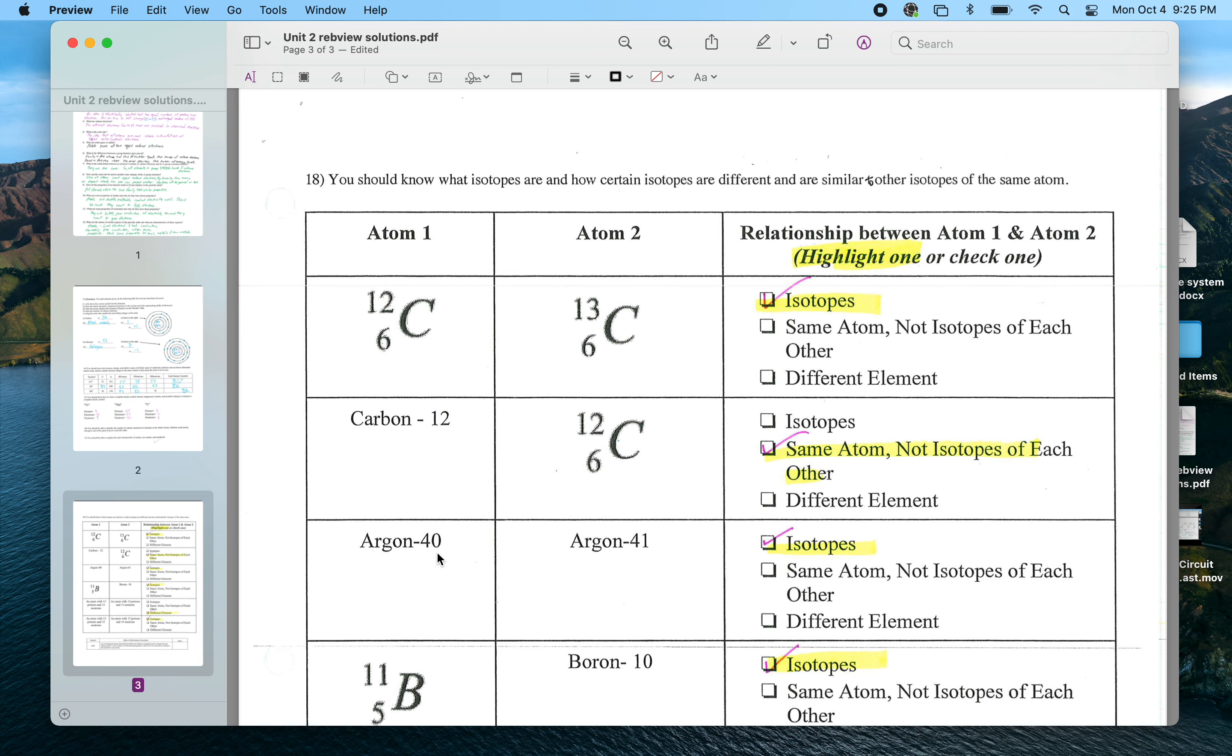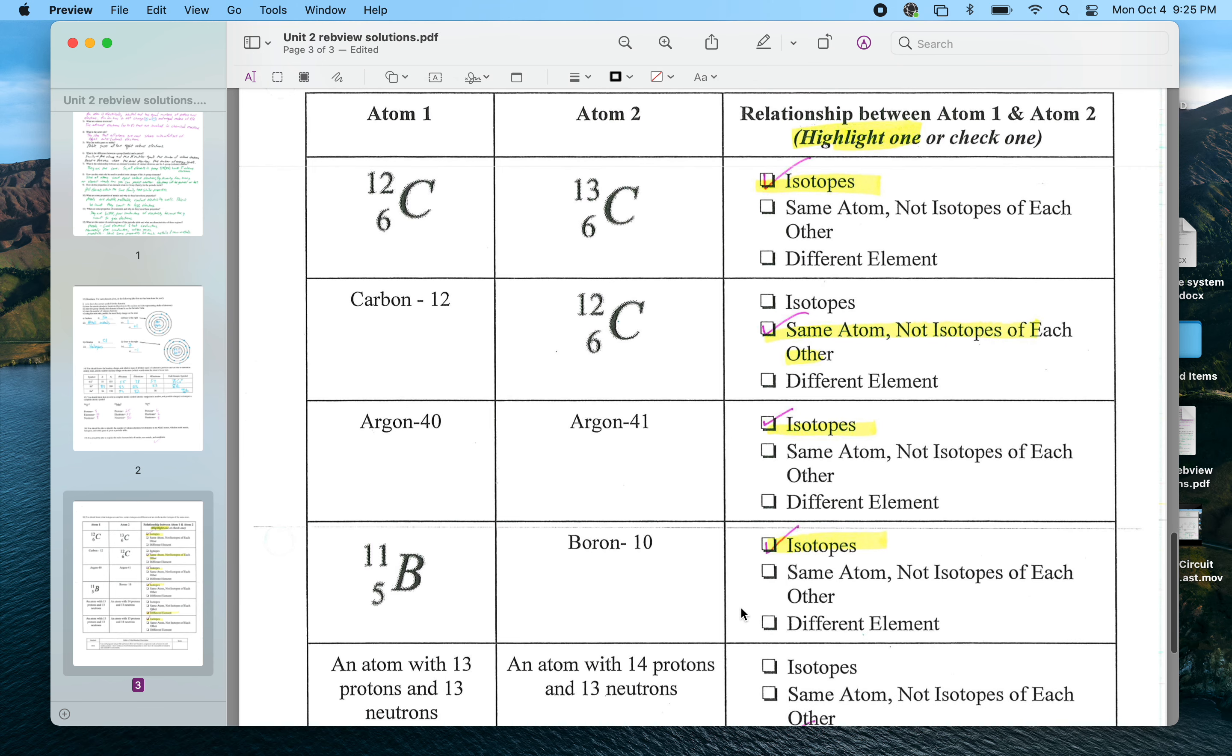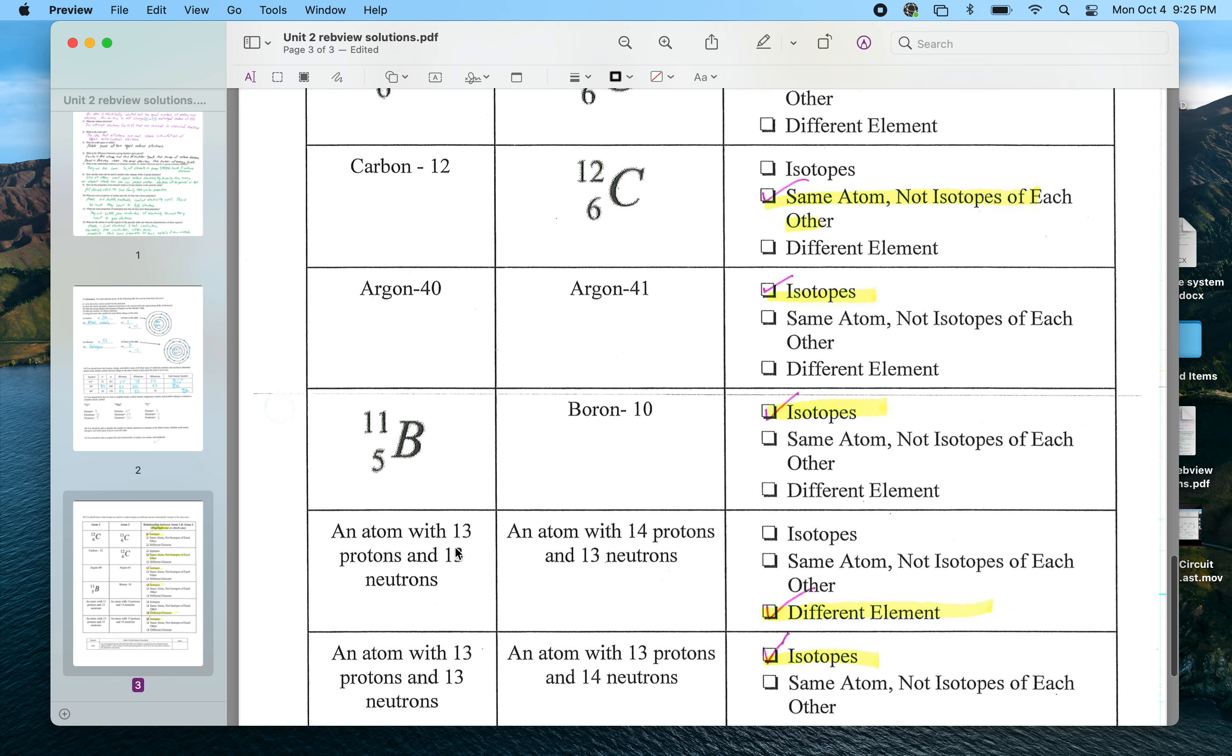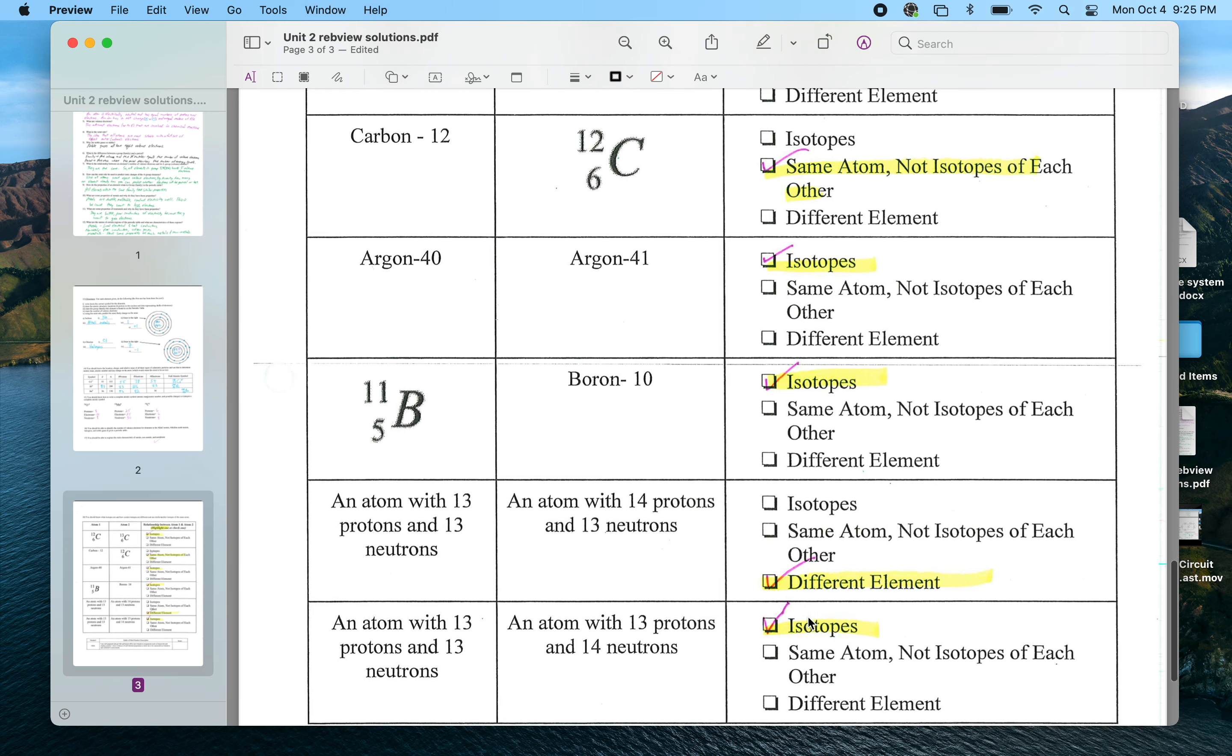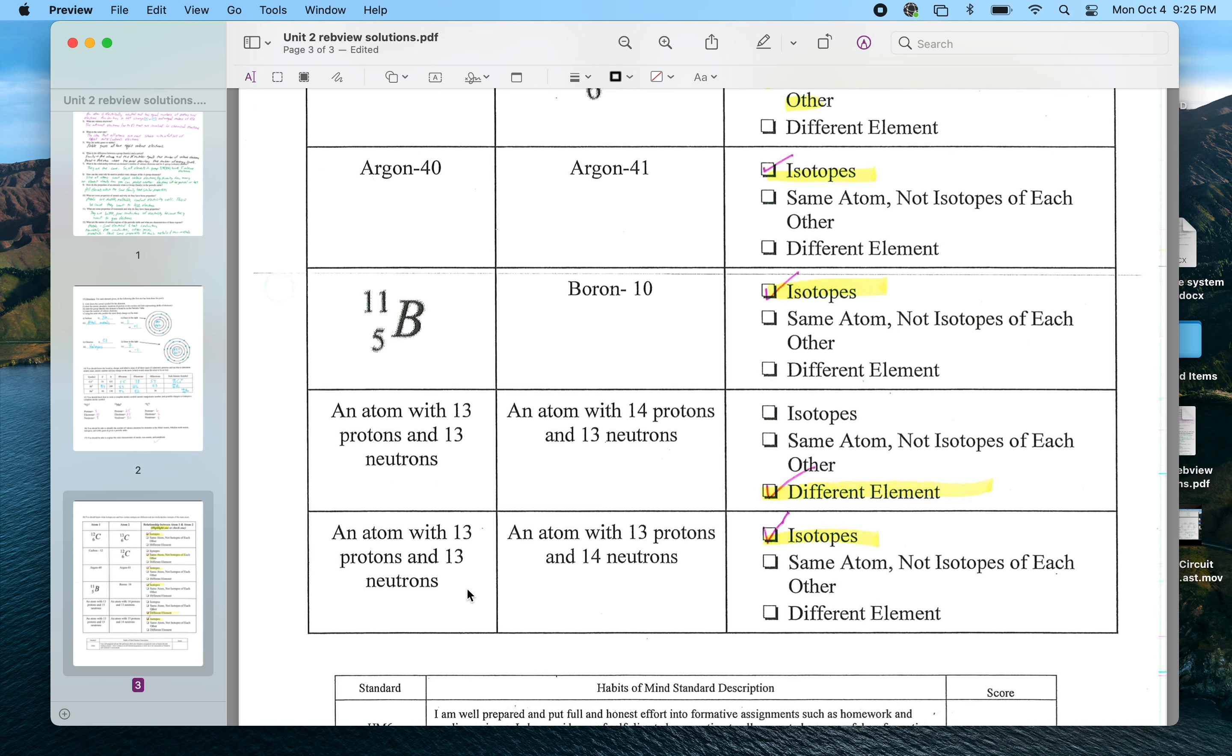Here argon-40 - now 40 is not the atomic number, it's the atomic mass. How do I know that? Because when I look at the periodic table, the atomic number of argon is 18. Therefore this means the mass, and since I have different masses for the same type of atom, those are isotopes, just like in the isotopic penny lab we did. Here this is boron-10, this is boron-11 - different masses, they're both boron, so they're isotopes. An atom with 13 protons and 13 neutrons compared to an atom with 14 protons and 13 neutrons - well, this atom with 13 protons is aluminum, this atom with 14 protons is silicon, so those are completely different elements.